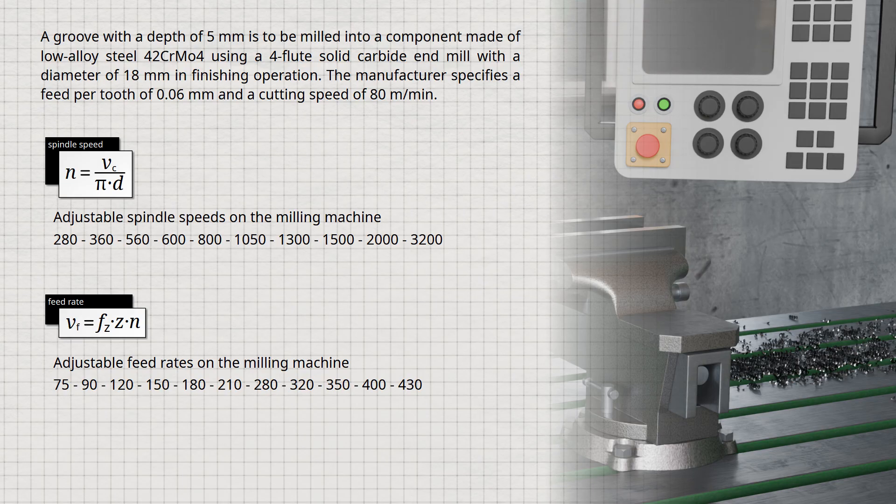Let us now determine the spindle speed and feed rate to be set on the machine. Using the given cutting data, we first calculate the theoretical spindle speed to be set on the machine. To do this, we insert the specified cutting speed in meters per minute and the cutter diameter in meters into the corresponding formula. This yields a spindle speed of 1415 revolutions per minute.